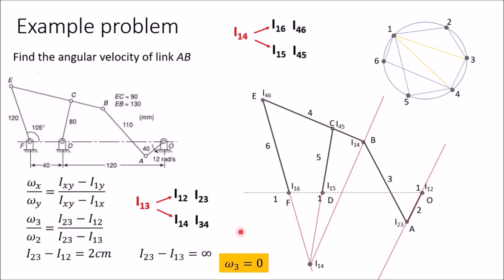Both methods give ω_3 (angular velocity of link AB) = 0. However, the book gives the answer as 1.72 rad/s. I request you to verify this problem using an analytical method or graphical software like AutoCAD with exact dimensions, and check whether you get 1.72 rad/s or 0. Thank you for watching.